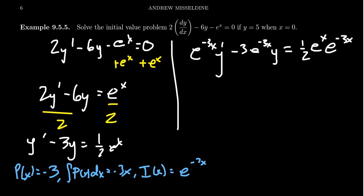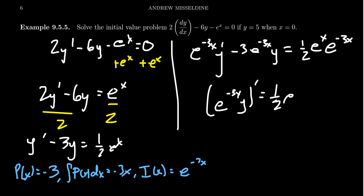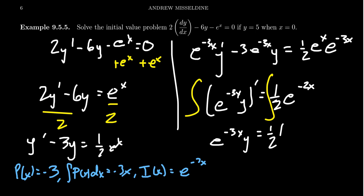On the left-hand side, this factors as the derivative of e to the negative 3x times y, by the product rule. On the right-hand side, when multiplying exponentials you add the exponents, so we get 1/2 e to the negative 2x. Now integrate both sides. The left-hand side, since it's already a derivative, integrates to e to the negative 3x times y. The right-hand side gives negative 1/2 e to the negative 2x plus a constant.